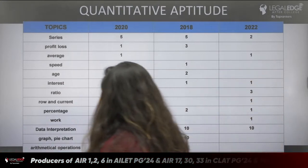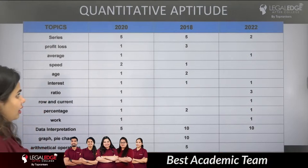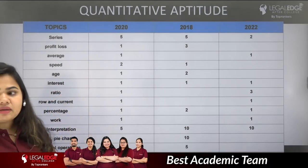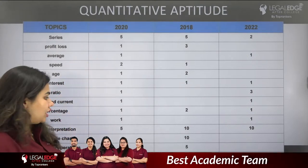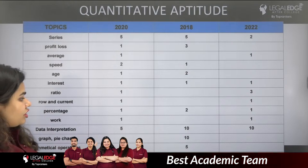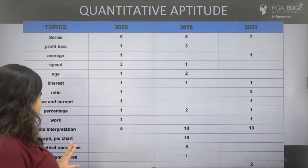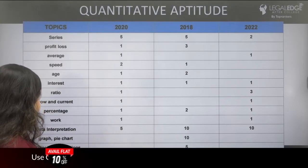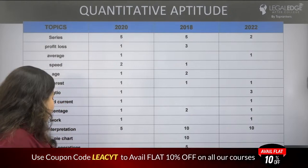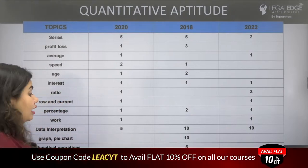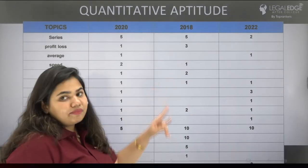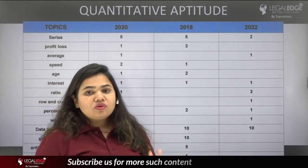Regarding graph and pie chart questions, they were not asked in 2018. Mathematical operations and circumference/area were also not asked in 2018. Variables had 2 questions in 2022.